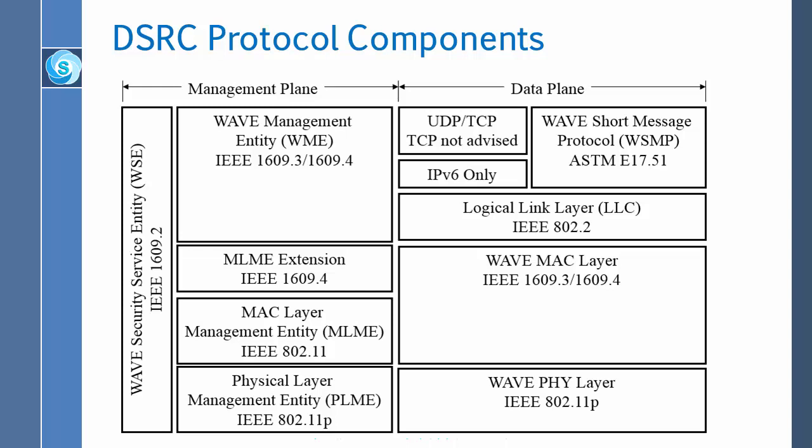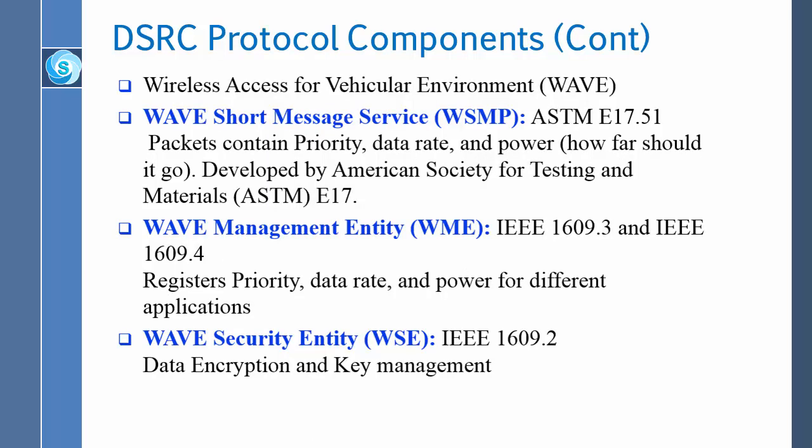This diagram shows that the area is covered by three different standard bodies. ASTM covers the application layer issues — different priorities, message types, and power handling. IEEE 1609 mostly covers management and security, and 802.11 provides the physical layer.